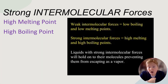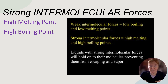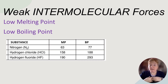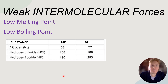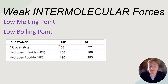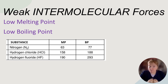With strong intermolecular forces, molecules will have a high boiling point and a high melting point. With weak intermolecular forces, molecules will have a low melting point and a low boiling point. So if I'm given this data — melting point and boiling point — when I look at these numbers, nitrogen's numbers are much lower, which means hydrogen fluoride has stronger intermolecular forces.